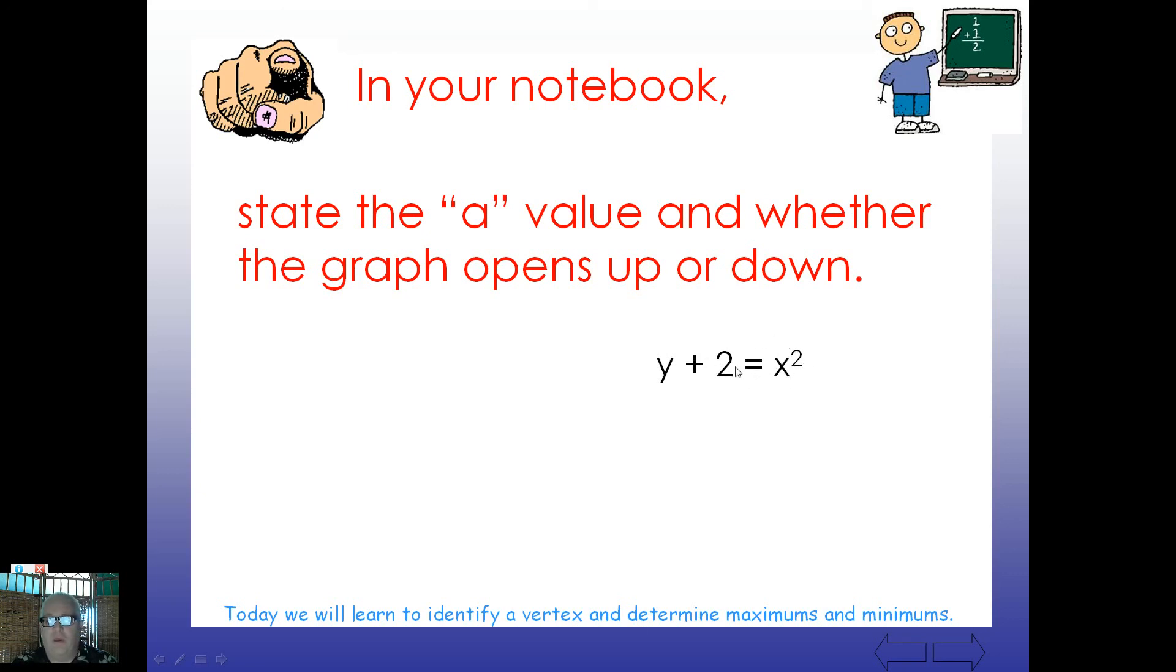How about this one? Again, y is not alone, but if I move this 2 over, remember that 2 is really not going to impact this at all. It's just going to be negative 2 over here. What's this a value, and does it open upward or downward? Well, the a is 1, and it does open upward. How about this one? y minus 2x squared equals negative 3. Is this in the proper form? Probably not. So we're going to move that 2x squared over. What's the opposite of subtracting 2x squared? Adding. So we'll put it on the other side. So we should get an a value of 2. And because it's positive, it's going to open upward.